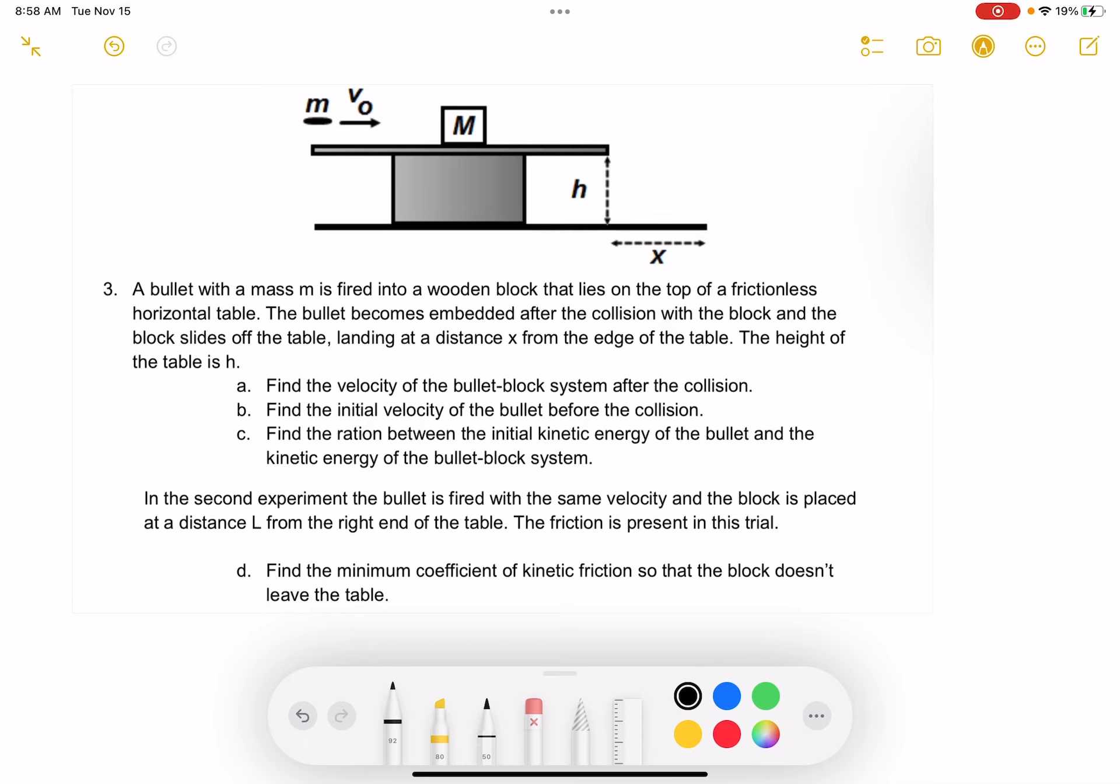A bullet with a mass m is fired into a wooden block that lies on top of a frictionless horizontal table. The bullet becomes embedded after the collision with the block, and the block slides off the table landing at distance x from the edge of the table. The height of the table is h.